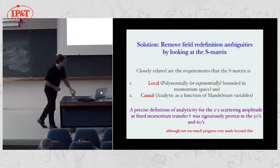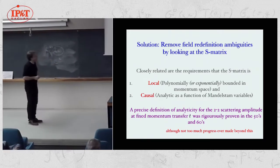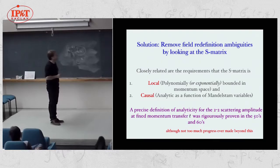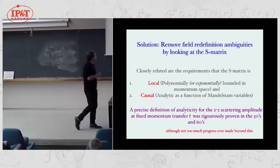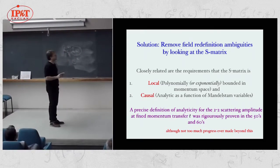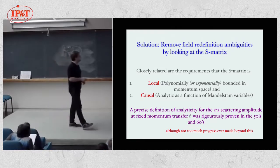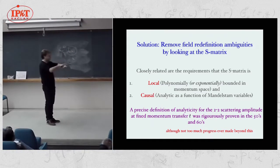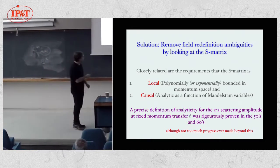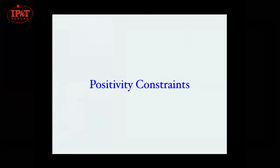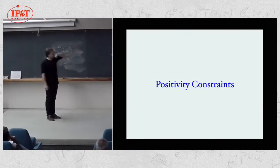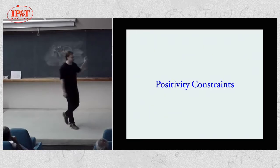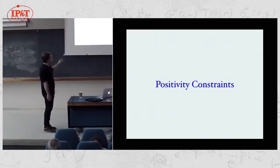There's the statement of causality, which you can relate to the analyticity of the scattering amplitude as a function of the Mandelstam variables. It was rigorously proven that the 2-to-2 scattering amplitude at fixed momentum transfer is an analytic function over a certain range of momentum transfer. That's all we're going to use for what I'll talk about. This brings me to what I call positivity constraints, which use these analyticity properties to put constraints on effective field theories.